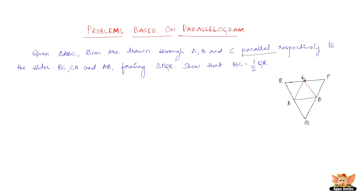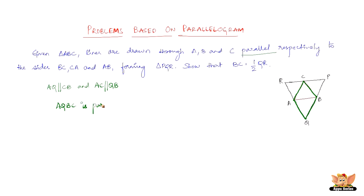What we need to show is that BC is half of QR. We have AQ parallel to CB and AC parallel to QB, and AQ parallel to BC. Based on this, we can say that figure AQBC is a parallelogram because the opposite sides are parallel to each other.